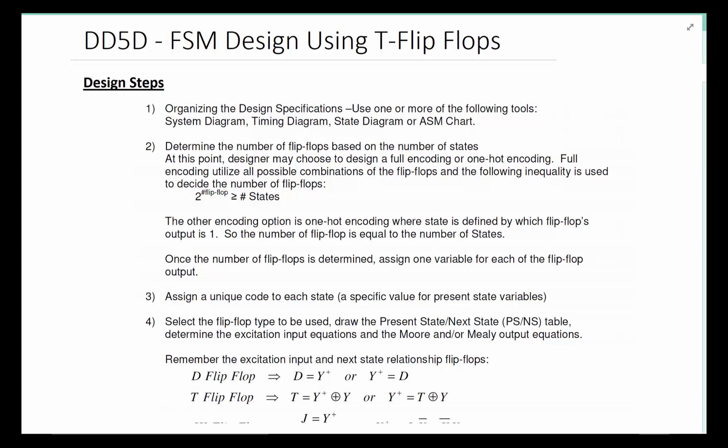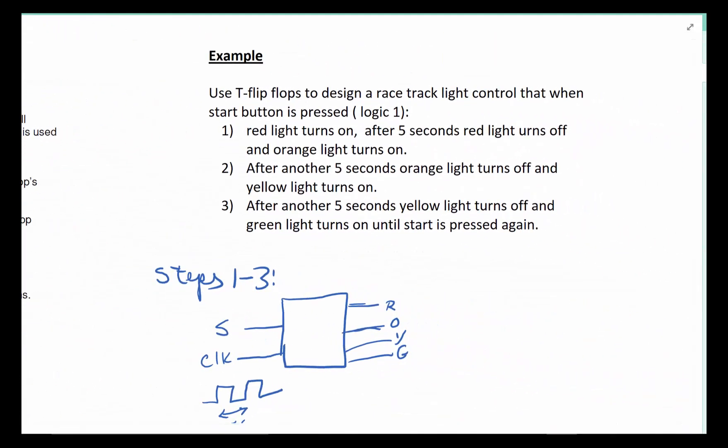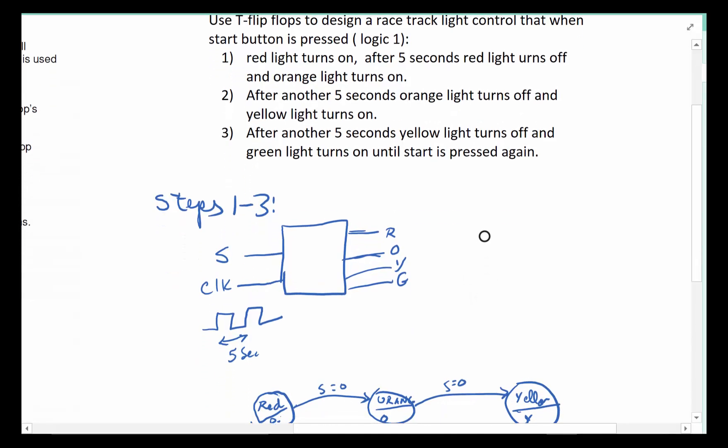In this video we're going to repeat the design process, except this time the goal is to build the design with T flip-flops. Going back to earlier design examples, we took this example where we are building a racetrack light control where a start button starts the sequence of lights from red to orange to yellow to green, each moving at five-second intervals, and anytime the start button is pressed we go back to red and start over again.